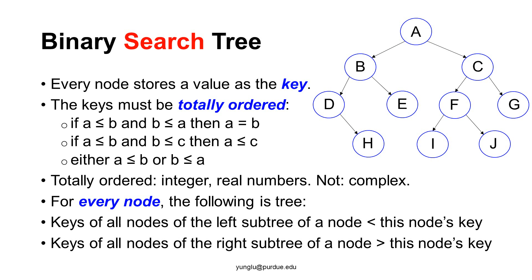The set is totally ordered if the following conditions hold. If A ≤ B and B ≤ A, then A and B must be equal. If A ≤ B and B ≤ C, then A ≤ C — this is called transitivity. Any two elements in the set must meet either A ≤ B or B ≤ A. Integers and real numbers are totally ordered sets, so they can be keys for a binary search tree.